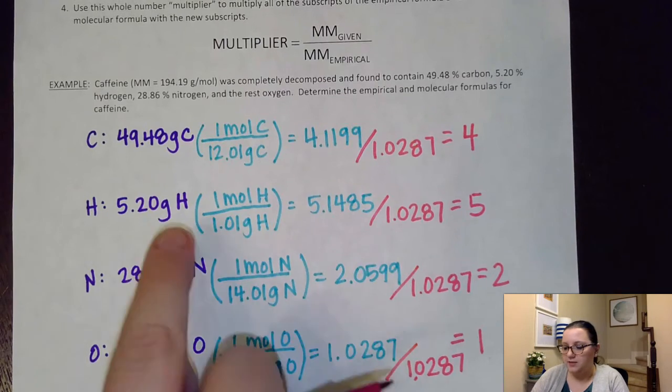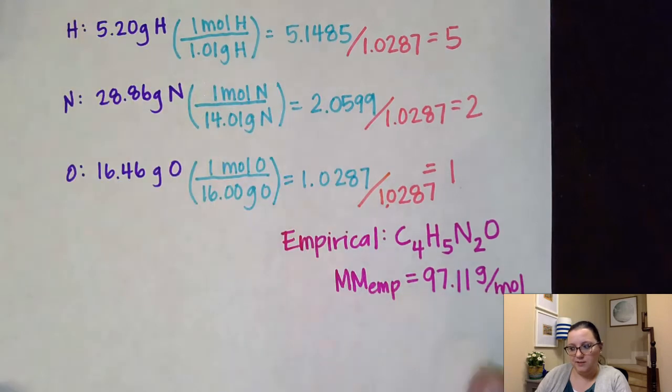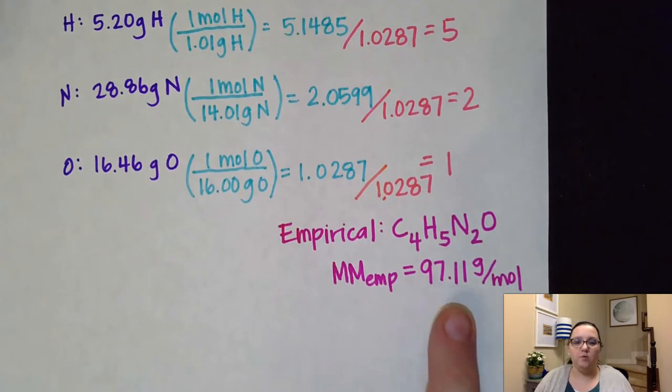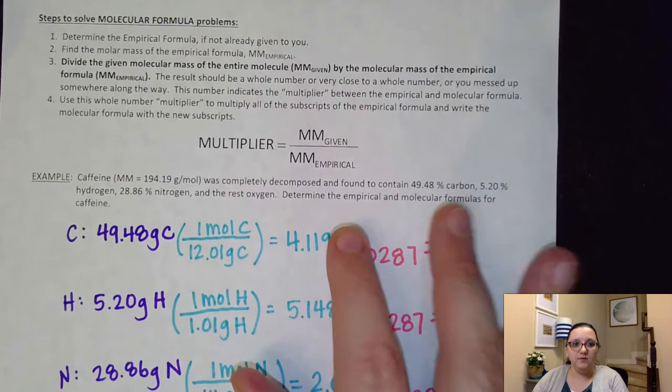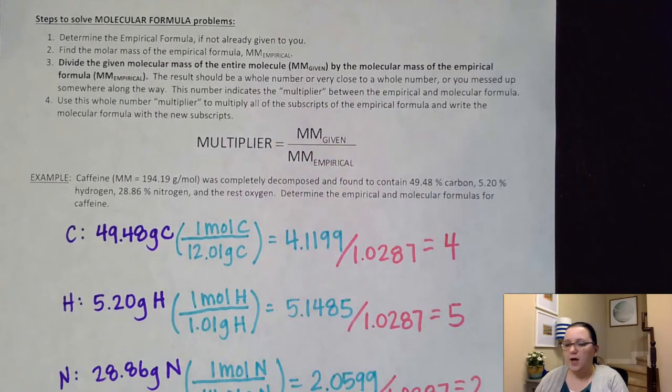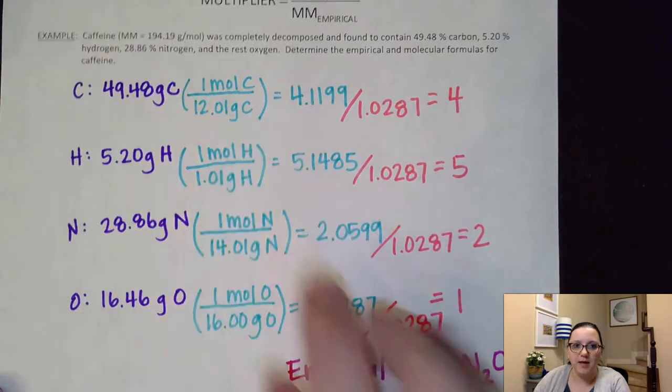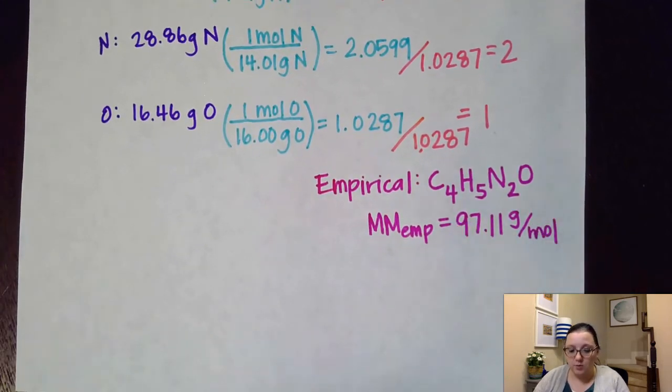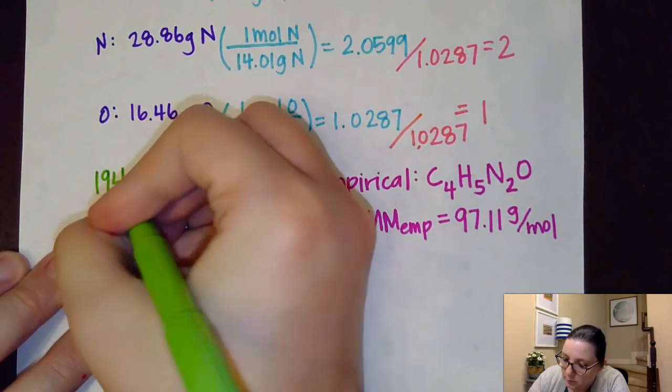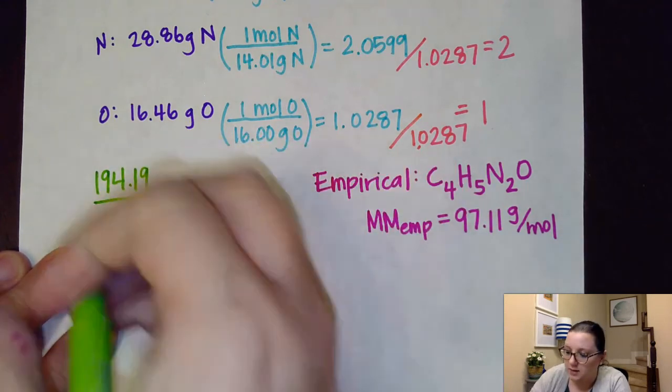So I could look back up here, and it said, hey, caffeine really has a molar mass of 194.19. Well, I see that's not 97.11. So therefore, I know that this is not the actual formula. It's not the molecular formula. So what I need to do now is figure out the multiplier. To do that, what I need to do is compare my molar masses. I need to figure out how many times does this part molar mass fit into the whole entire molar mass. And I do that by dividing those values. So I would take my 194.19, my given molar mass in the original problem, and I'm going to divide it by the empirical formula that I just solved.